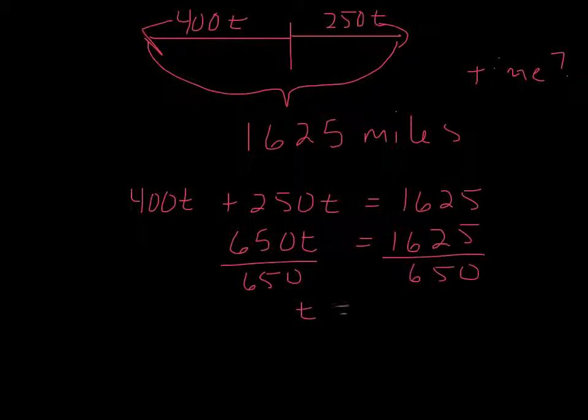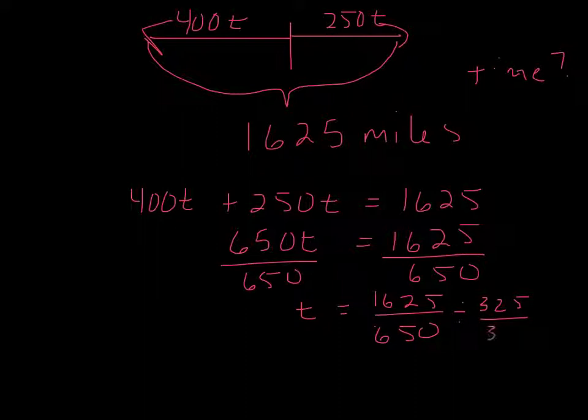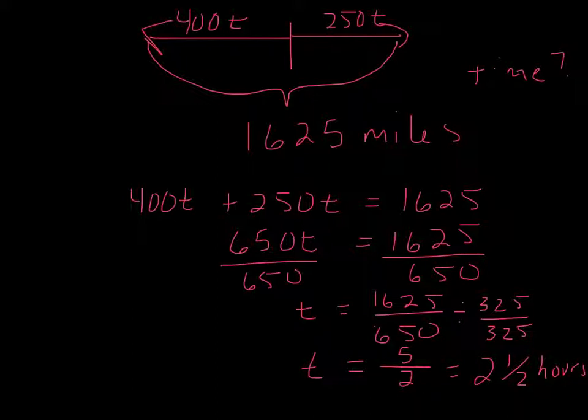That's not going to be an easy one. So we have 1,625 over 650. It might be easy if we could just leave that like that, but we can't. And I happen to cheat just a little bit. I happen to know that 325 can go into both of these. And if you reduce that down, you get 1625 divided by 325 is 5, 650 divided by 325 is 2. So 5 over 2 is equal to 2 and 1 half. And that means it's 2 and 1 half hours. So the two planes have to fly for 2 and 1 half hours to be 1,625 miles apart.